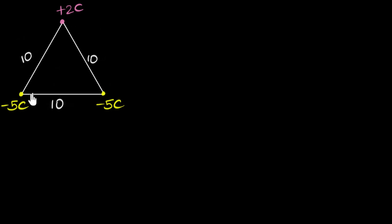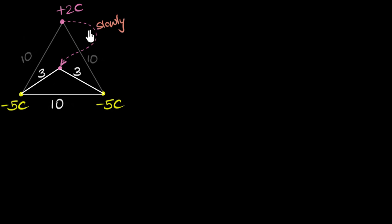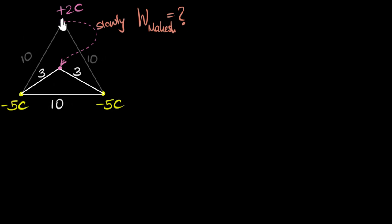We have three charges kept like this — these are fixed charges. Now imagine I take this plus two coulomb charge and slowly move it along this path and bring it to this point, so that now it is at a distance of three meters. These are all in meters from the charges. The question we want to answer is: in moving this charge, how much work did the external agent — that is me, Mahesh — do in moving the charge from here to here? And we also want to calculate how much work did the electric field do when the charge went from here to here.